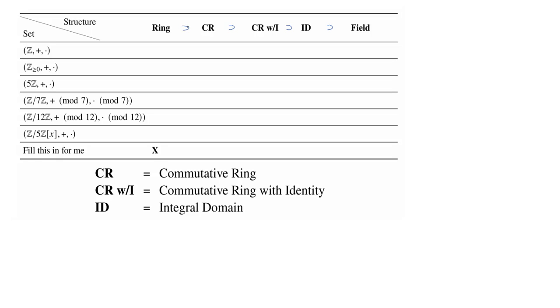And then, of course, there are some things that just aren't rings at all. So what we want to do is mark off all of the properties that each of these sets, along with the given binary operation, satisfy, and then maybe explain why it doesn't satisfy the next item on the list.